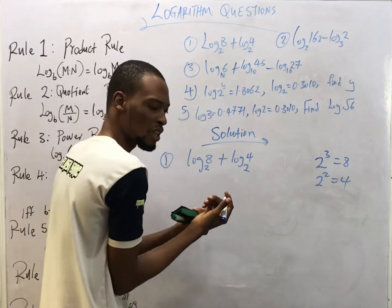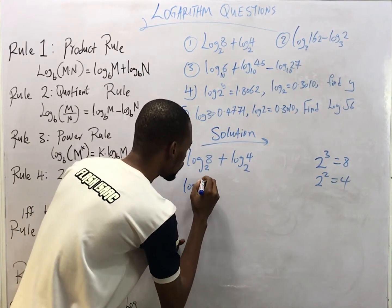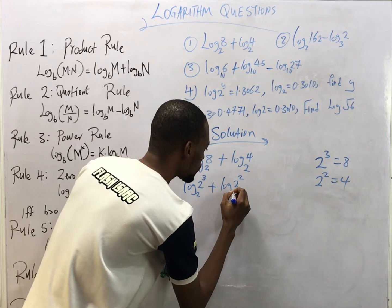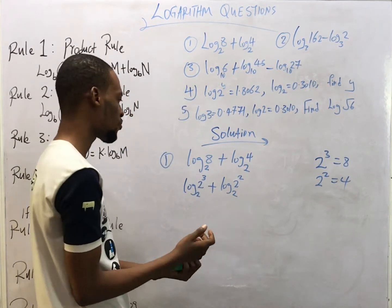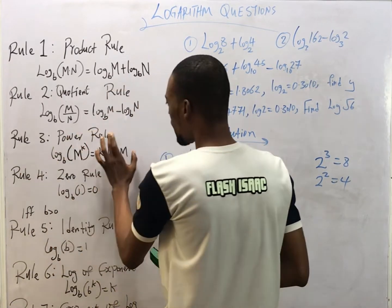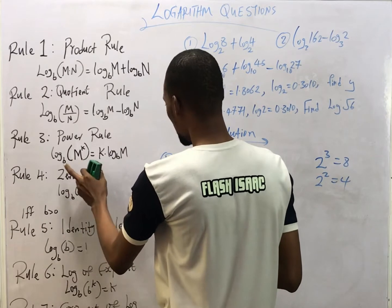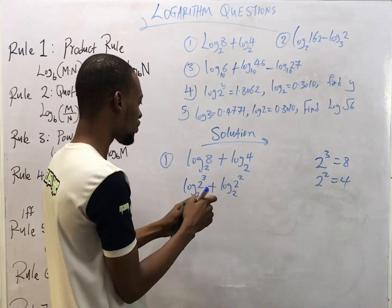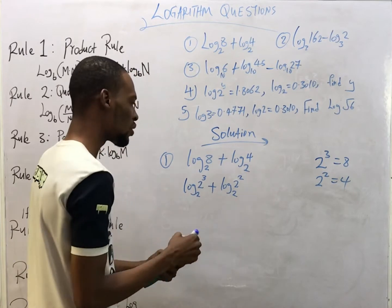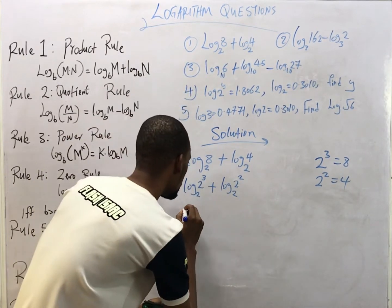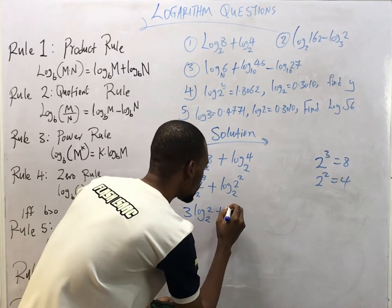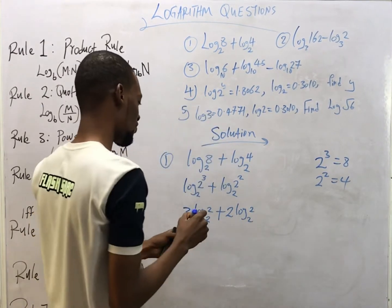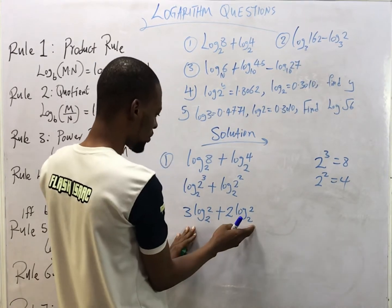With that, I can quickly say this is log(2³) to base 2, plus log(2²) to base 2 — and that's correct, I have not changed anything. Now look at the power rule: it states that when a log has a power, you can bring the power down. So we bring this power down here, and this power down here. This gives us 3·log(2) with base 2, plus 2·log(2) with base 2.